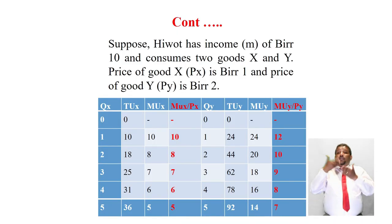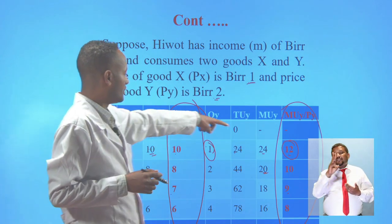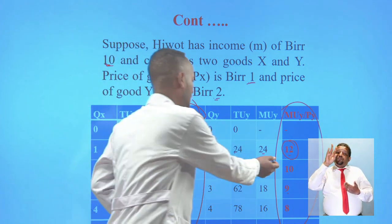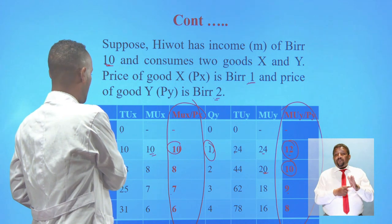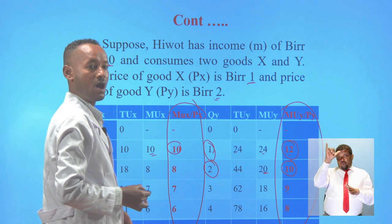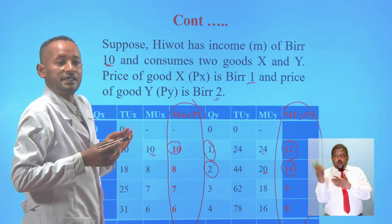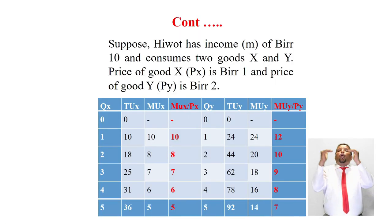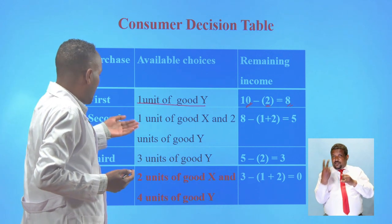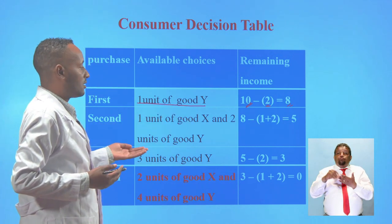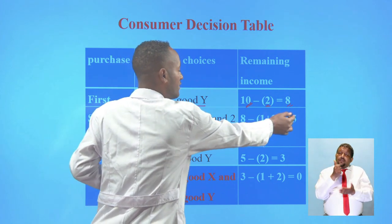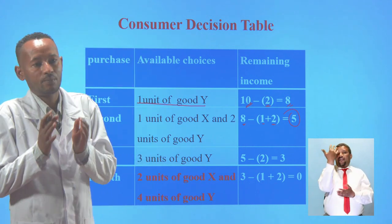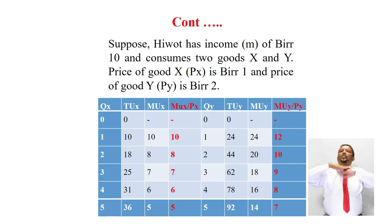In the next purchase, remaining MUx/Px values are 10, 8, 7, 6, 5, and remaining MUy/Py values are 10, 9, 8, 7. She gets equal MU per price = 10 on both sides: 1 unit of X and 2 units of Y. She buys both goods; the cost is 1 Birr (X) + 2 Birr (Y) = 3 Birr, leaving 5 Birr. With 5 Birr remaining she must proceed to the next purchase.